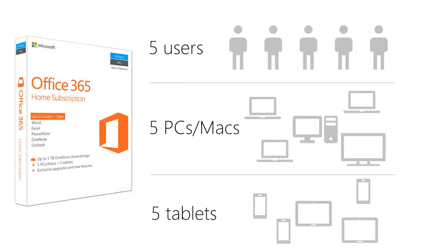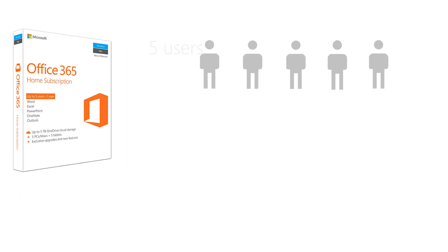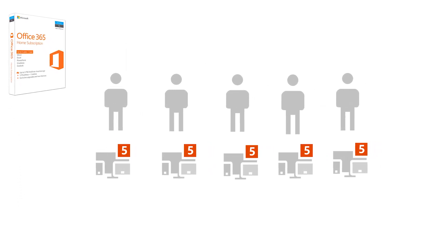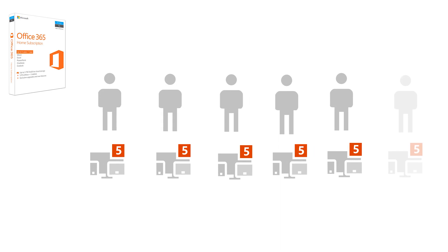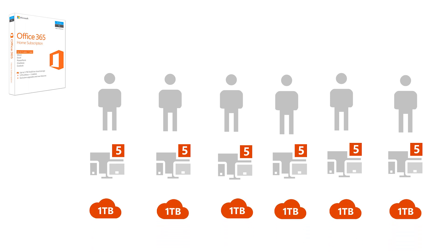And for those with bigger families, we're also increasing the number of licenses in a home subscription from five to six with no change in price. To be clear, that's six people with their own Office license and one terabyte of OneDrive cloud storage each, for a total of six terabytes.